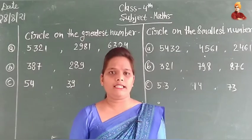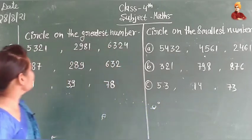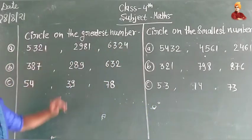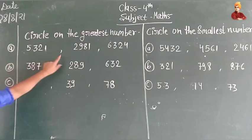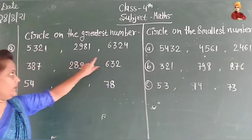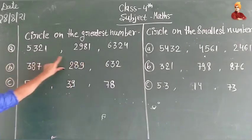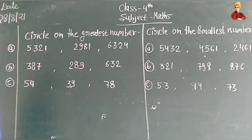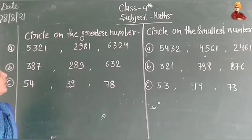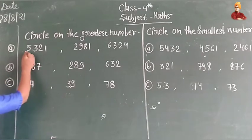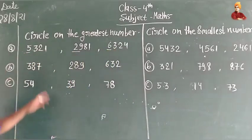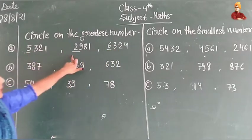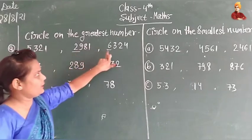First, we will find the greatest number — we will circle the greatest number. In this set, we have three numbers. We will see how to find the greatest number by looking at the left side first digit. Here we have 5, here is 2, and here is 6.